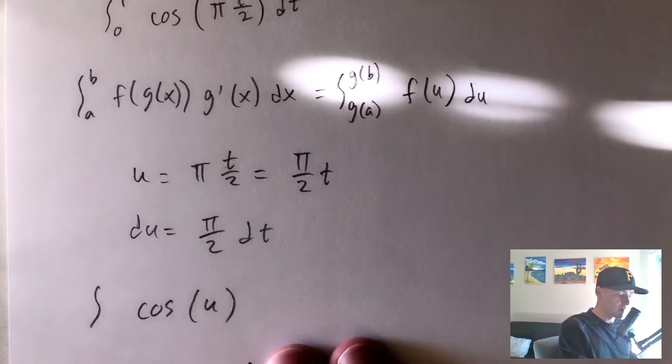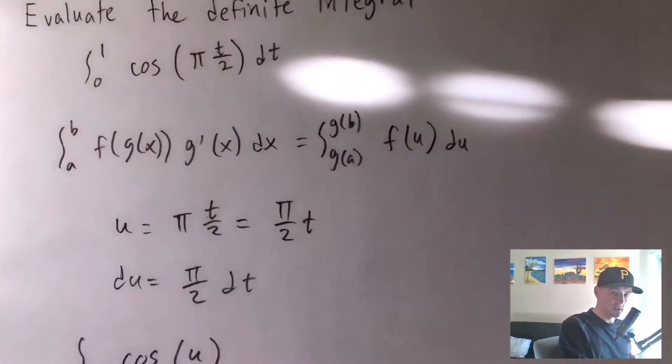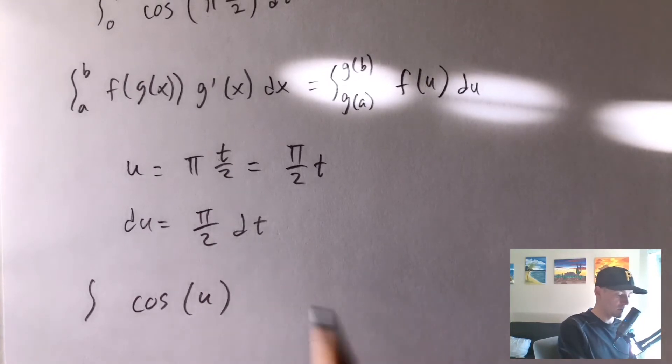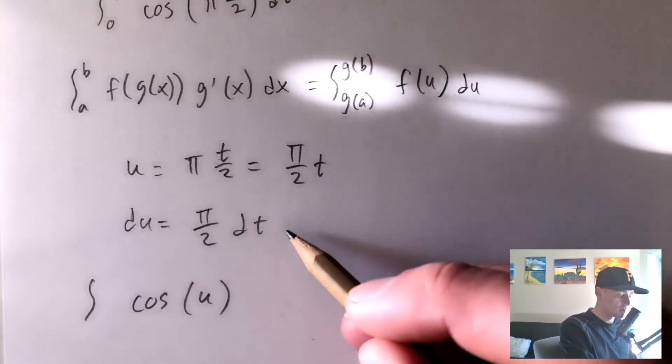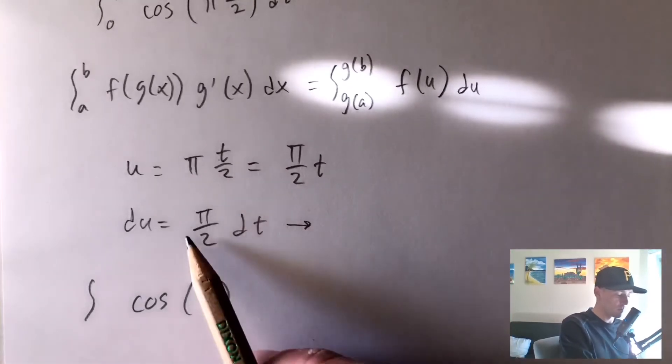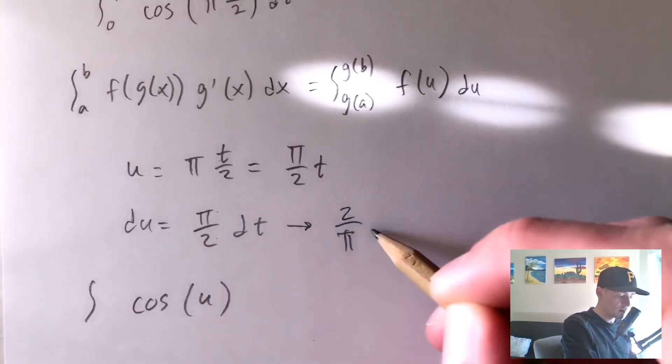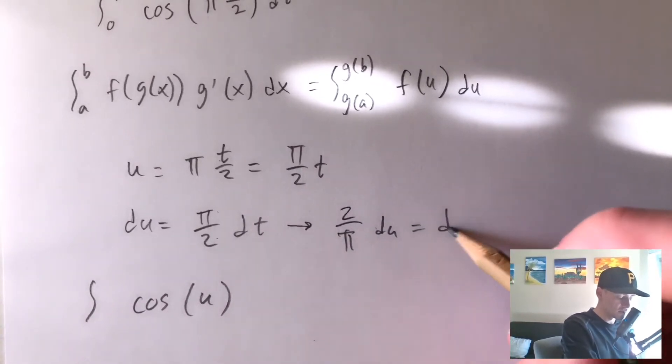And then the other piece we need to figure out is our dt that we had, right? We need to substitute that out as well. We can take this equation here to figure out what our dt is, and we need to rewrite this in terms of u. So what we're going to do is if we just multiply both sides by 2 over pi, that'll give us 2 over pi times du equals dt.